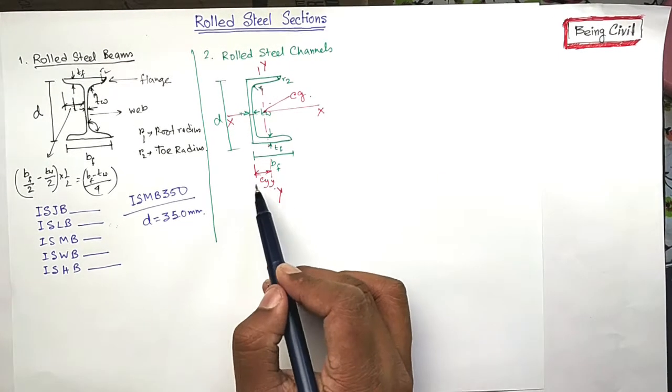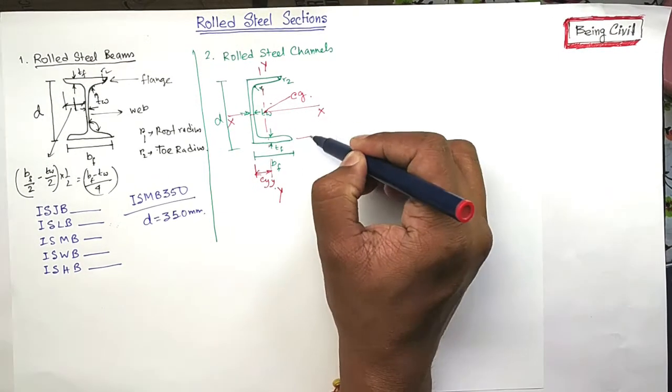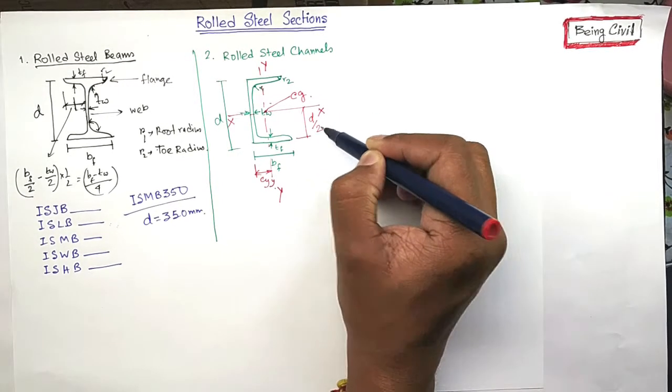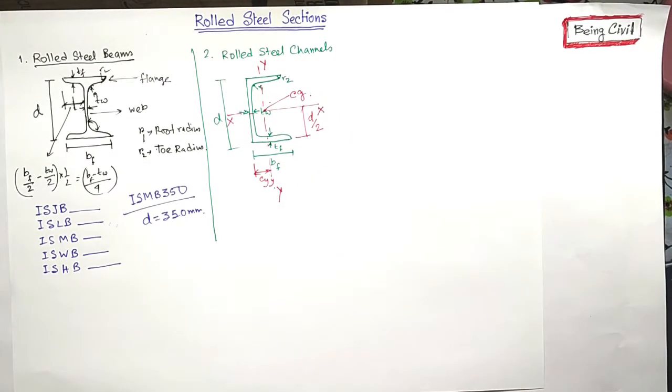This is CYY. This value is given in SP 6. And this value is D by 2. The position of center of gravity is given here. So it is rolled steel channels.